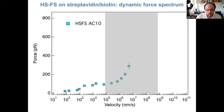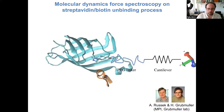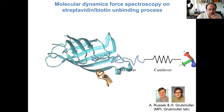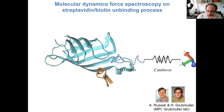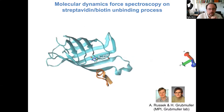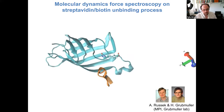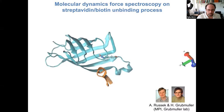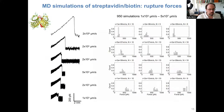To fill the other half, we needed molecular dynamics simulations down to these velocities. We asked Helmut Grubmüller's group at the Max Planck Institute to simulate the very same experimental conditions — including the PEG linker and a cantilever with the same spring constant. This allowed them to produce movies of biotin unbinding, and they carried out more than 900 simulations going down to the millimeter-per-second regime.